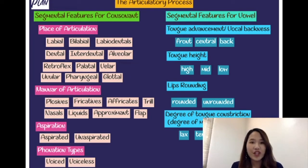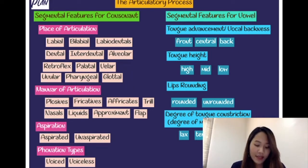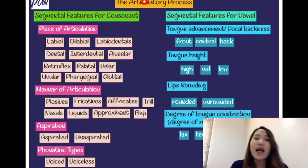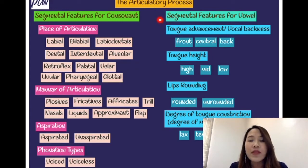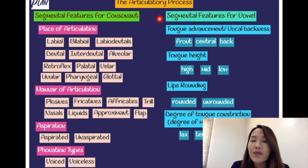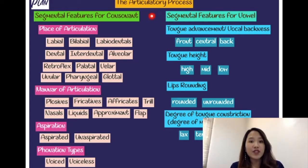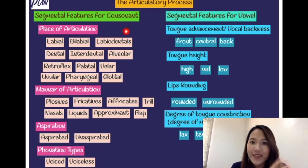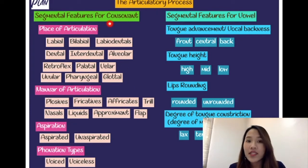Let me show you an overall picture of the articulatory process. As I told you, we can divide it into two types: the first one is segmental features for consonant — how we make consonant sounds and which features we need — and the second one is segmental features for vowel. We are going to focus on features for consonant sounds. There are four features for consonant sounds, so please remember them well, as they will definitely be on your midterm exam.